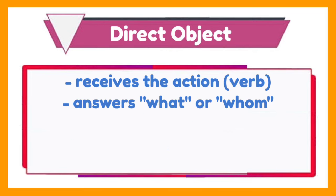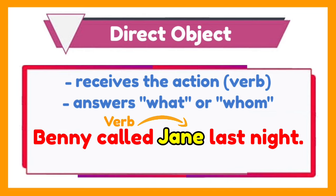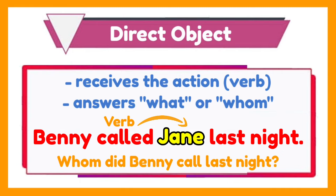Another example: Benny called Jade last night. The direct object is Jade. It is the receiver of the action or the verb which is called. And it answers the question, whom did Benny call last night?